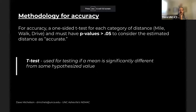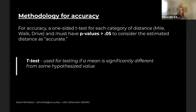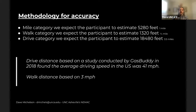For the accuracy methodology, I used a one-sided t-test, which tests if the mean of a set of data observations differs from a hypothesis. When talking about distance, walk, and drive, there's a distance I'm expecting people to estimate. We consider people accurate when the p-values from those tests come back greater than 0.05 — meaning there's only a 5% chance this would have randomly happened. That's the standard for most statistical analysis.